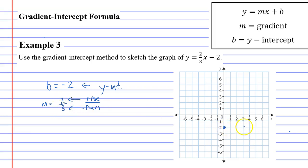So 1, 2, 3, 1, 2 squares up. 1, 2, 3, 1, 2 squares up.